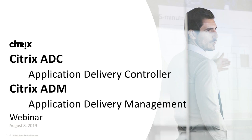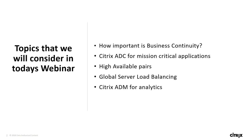Our goal today is to look at Citrix ADC and ADM technologies in the light of typical business need and real value — how these technologies provide business-critical features. The following topics will be discussed: Topic one, how important is business continuity. Topic two, Citrix ADC for mission critical applications. Topic three, high availability — specifically high availability pairs. Topic four, GSLB, or global server load balancing. And topic five, Citrix ADM for analytics.